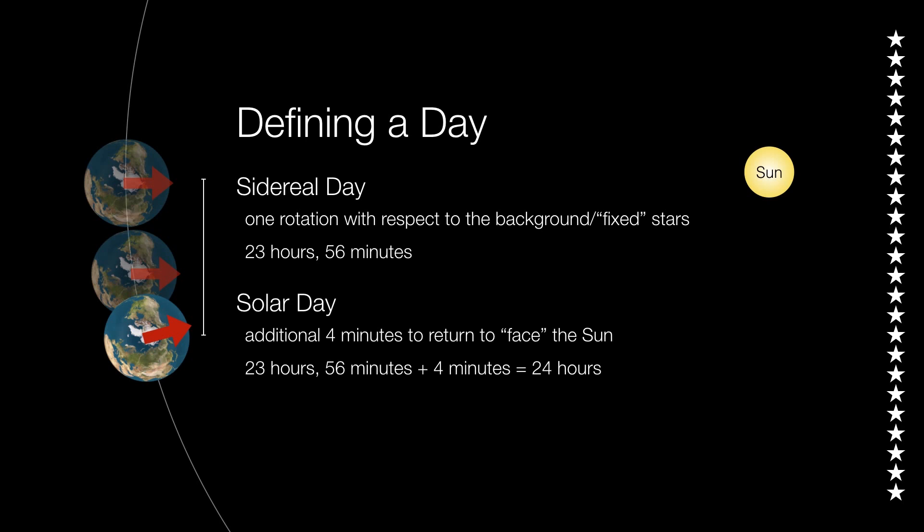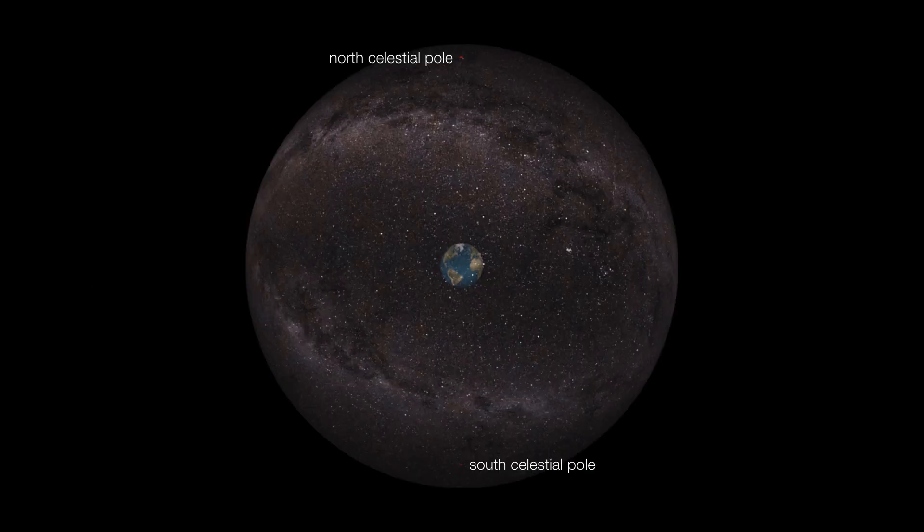Now, good for us, because we know enough about astronomy to build up this sort of picture. But to the ancient Greeks, it was very difficult to imagine anything other than the entire cosmos revolving around the Earth.